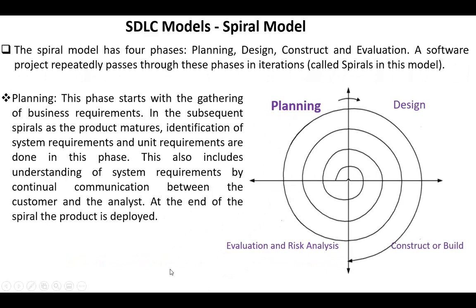The spiral model has four phases: planning, design, construct or build, and evaluation and risk analysis. A software project repeatedly passes through these phases in iterations called spirals in this model.